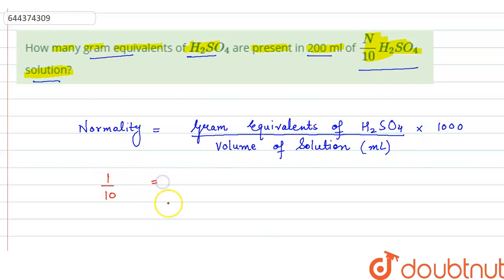It will be equal to gram equivalents of H2SO4 we have to calculate. We can write it as gram equivalent of H2SO4 divided by volume of solution in ml is given 200 into 1000.